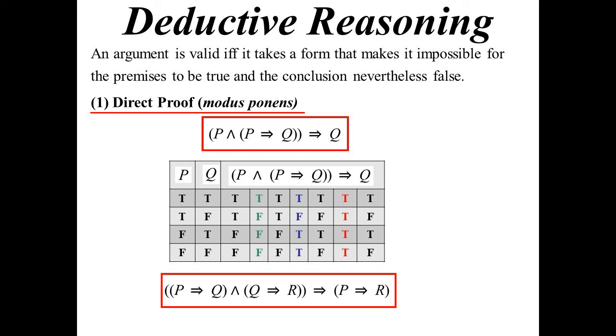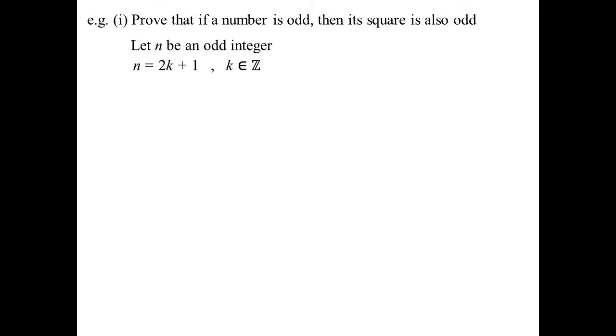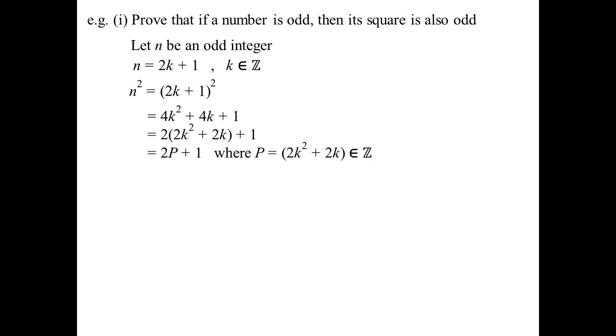The other thing in direct proof: if you know P implies Q, but you also know Q implies R, then it's fair enough to conclude that P implies R. Proof that if a number is odd, then its square is also odd. I'm going to let N be an odd integer — so it equals 2K plus 1, where K is some integer. If I square that, I end up with 4K² plus 4K plus 1.